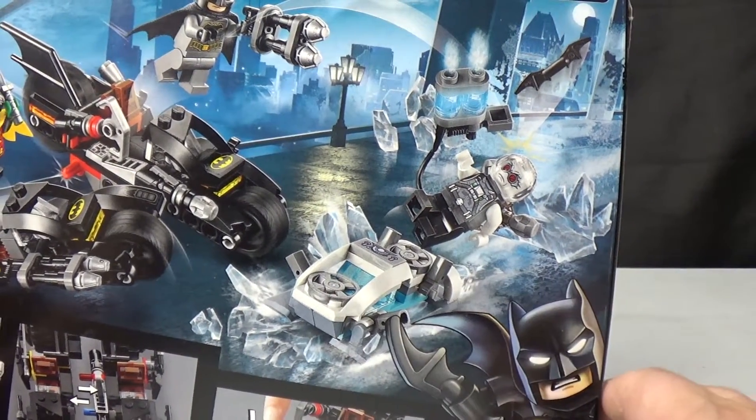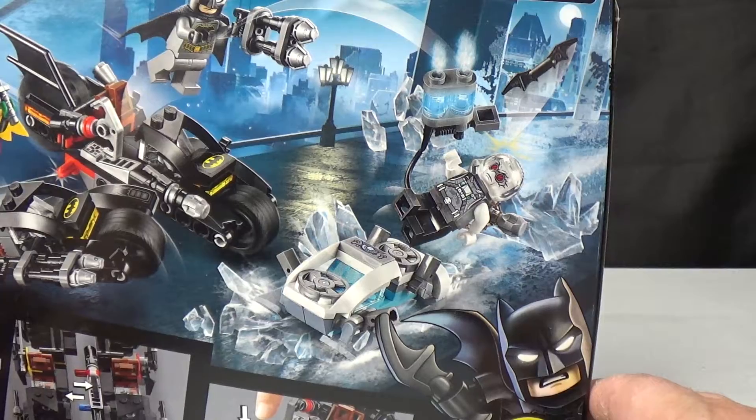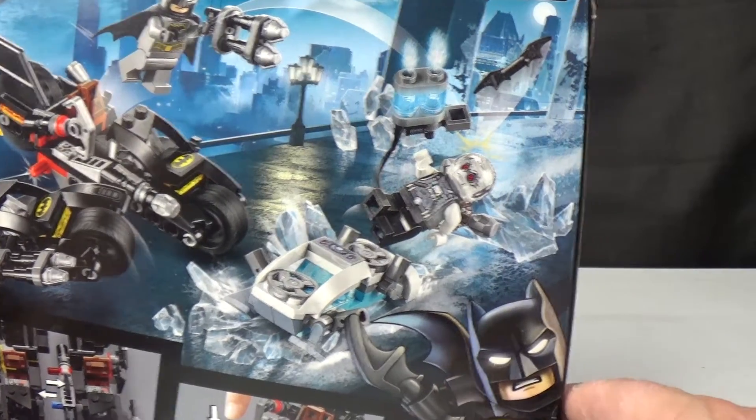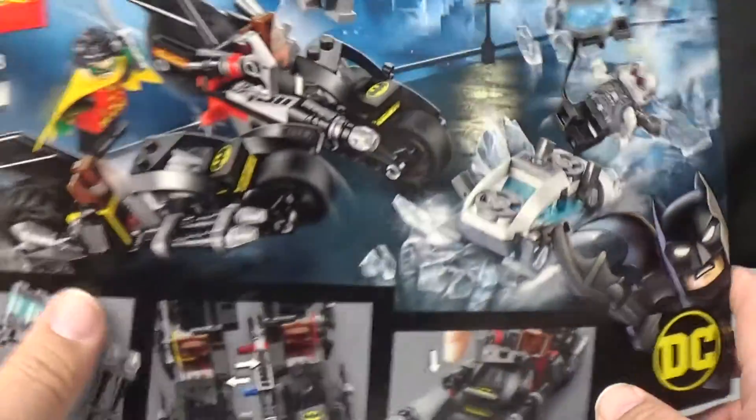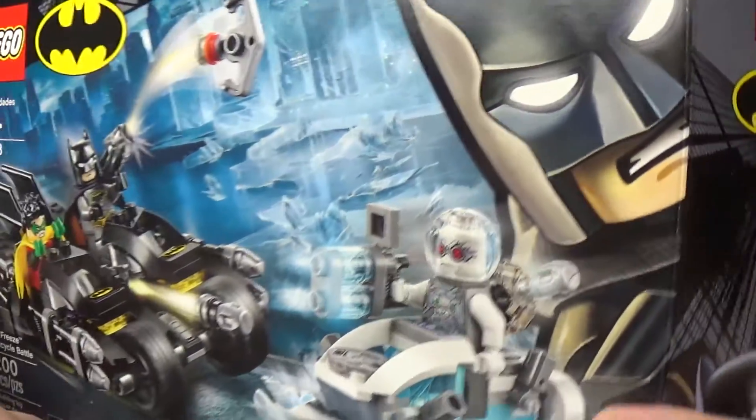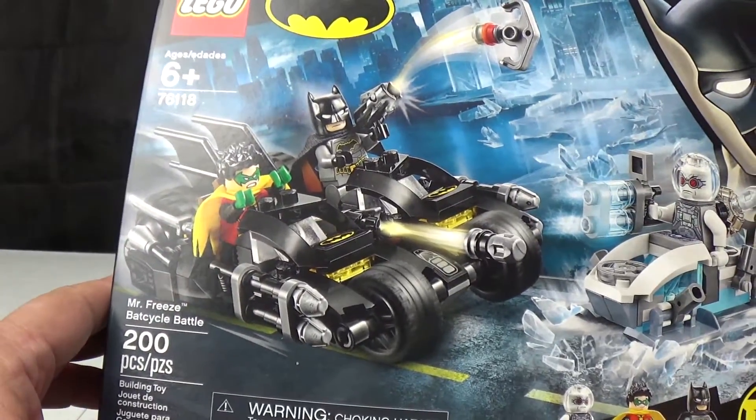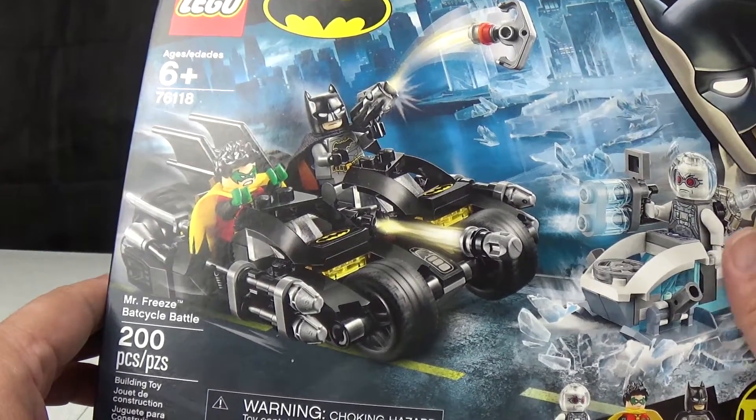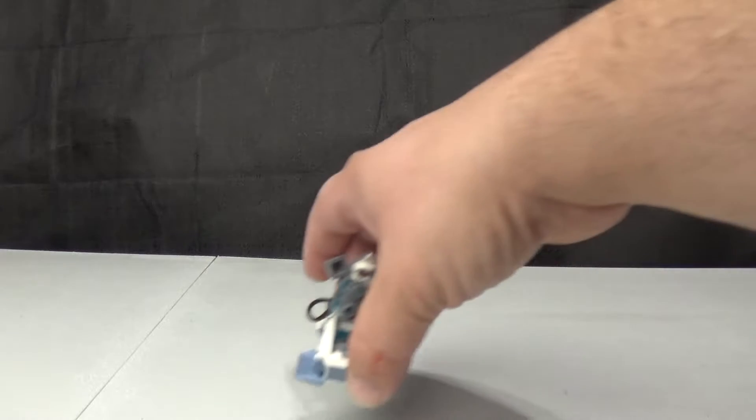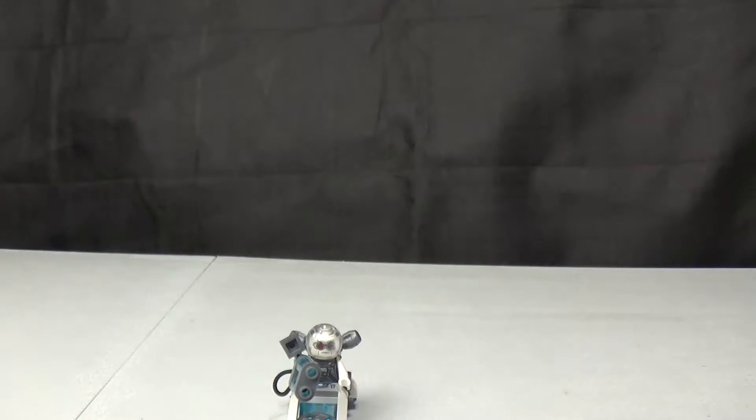You also get a little snowmobile that Mr. Freeze rides on. This set has 200 pieces. It took me about three hours to do, but I was also watching YouTube videos at the same time, so I was just taking my time and enjoying my build.